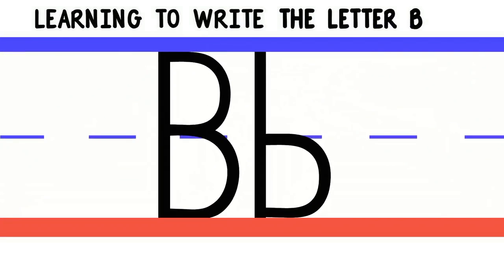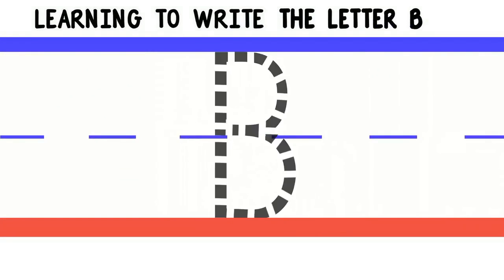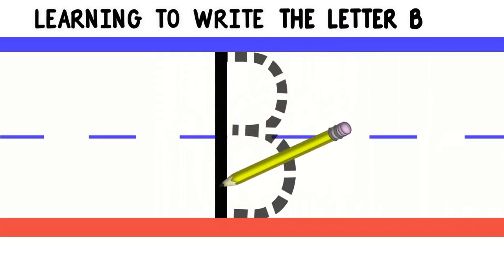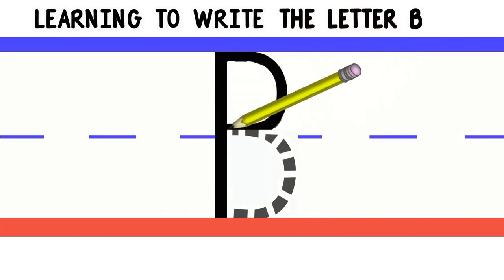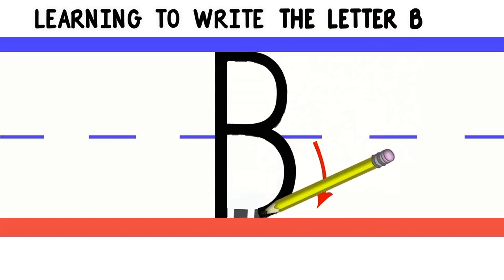First we'll start with uppercase or Big B. To write uppercase B, we'll start at the top. Then go down to the bottom. Then we'll go back to the top and do a curved line to the middle. Then we'll do another curved line to the bottom.